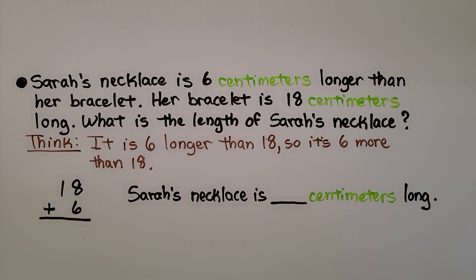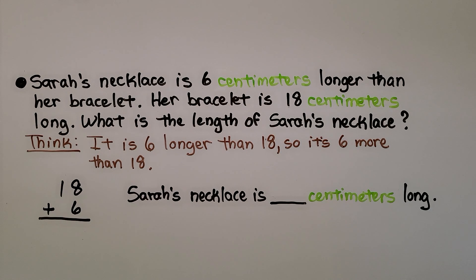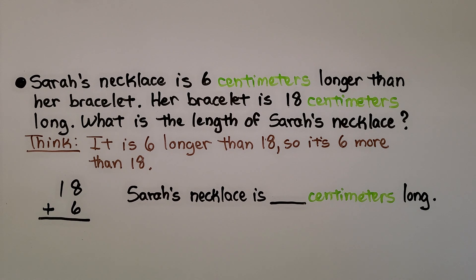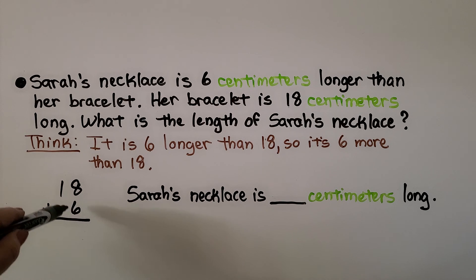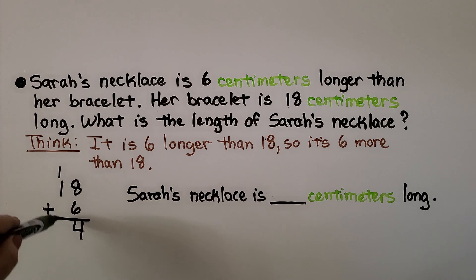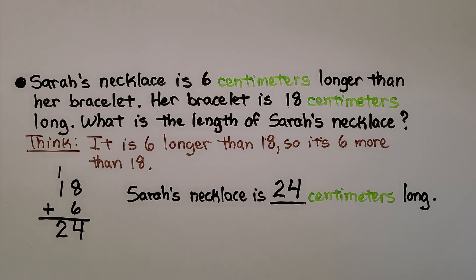Here's another word problem: Sarah's necklace is 6 centimeters longer than her bracelet. Her bracelet is 18 centimeters long. What is the length of Sarah's necklace? The necklace is 6 centimeters longer than the bracelet, meaning it's 6 more than 18, so we add: 18 plus 6. We have 8 ones plus 6 ones, that's 14 ones. We regroup the 10 and put the 4 down, and 1 plus 1 ten makes 2 tens. Sarah's necklace is 24 centimeters long, so we needed to add to solve this problem.